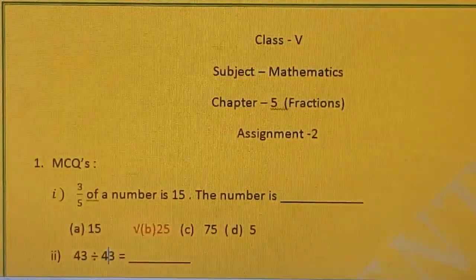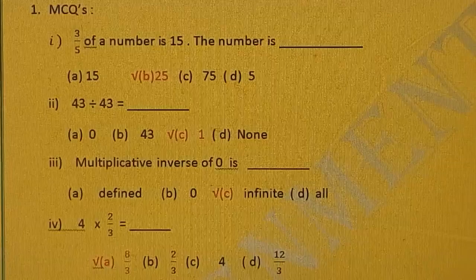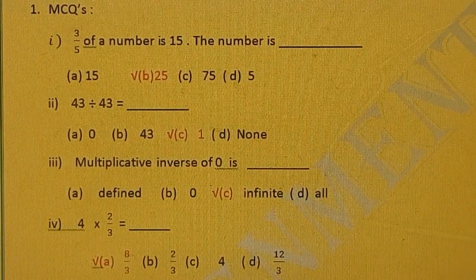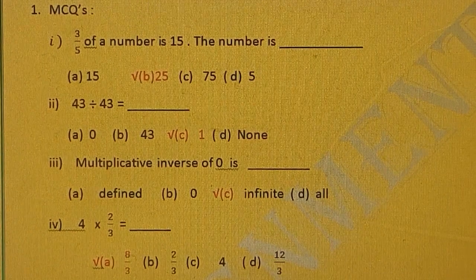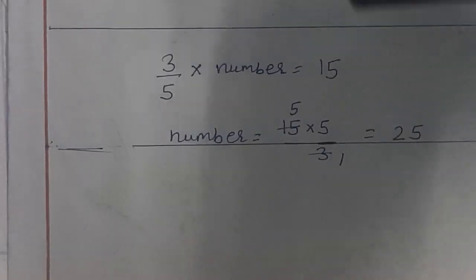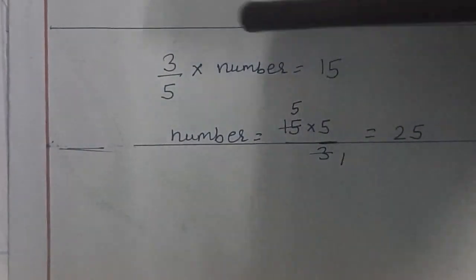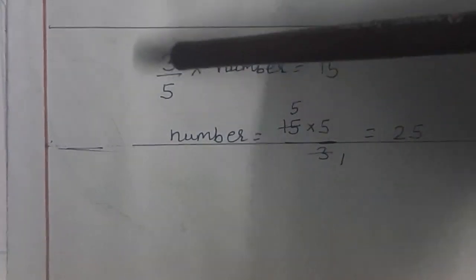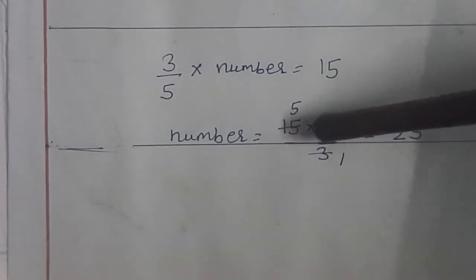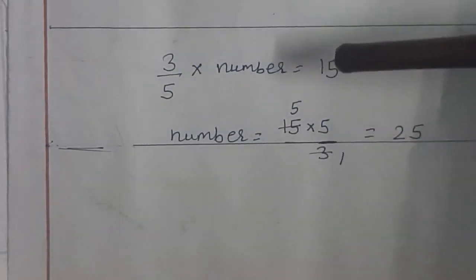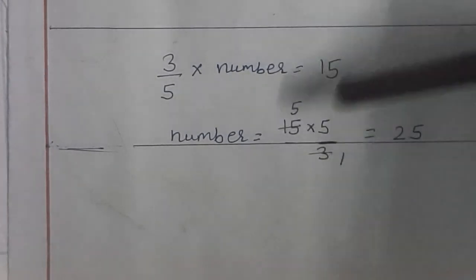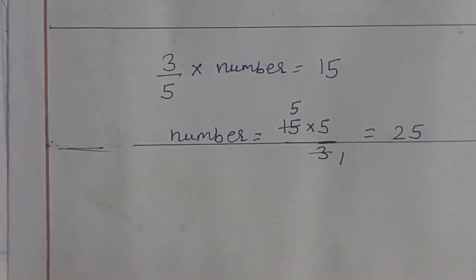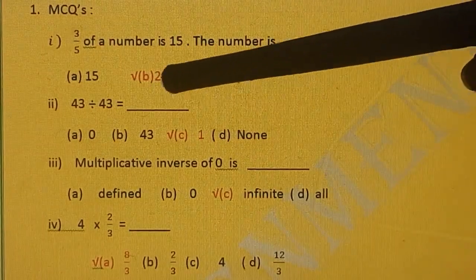Question number 1, MCQs. First part, 3 upon 5 of a number is 15. The number is, so 3 upon 5 of a number. So look here how we will solve 3 upon 5 of a number. 3 upon 5 multiply the number is equal to 15. We have to find out the number. So 3 upon 5 will be shifted to the right side. It will become 15 into 5 upon 3. Reciprocal will be there. 3 ones are 3, 3 fives are 15, 5 fives are 25. So your answer is 25. Option B.